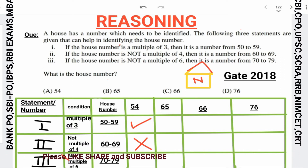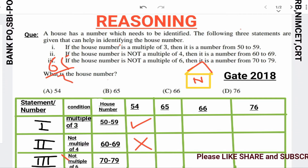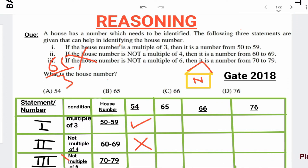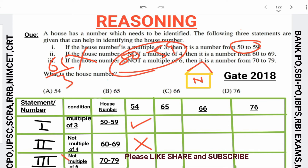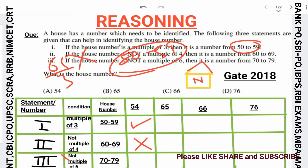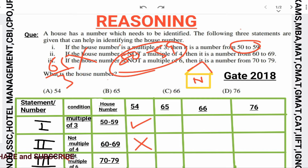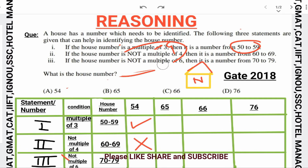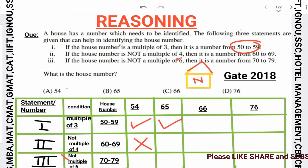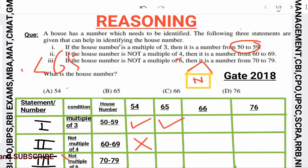Next, let's check option 65. Is 65 a multiple of 3? No, 65 is not a multiple of 3. Since it is not a multiple of 3, the first condition is not triggered — so there is no requirement for it to lie between 50 and 59. That is fine, no mistake there.